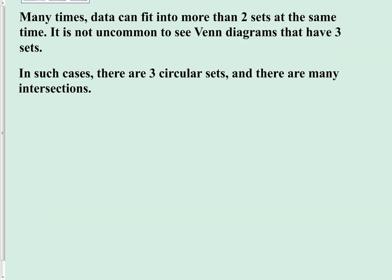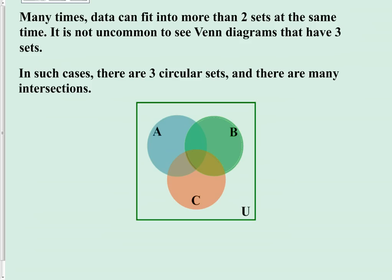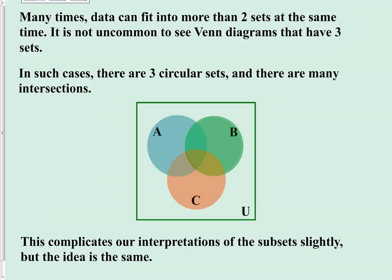So in the case that we do have three sets of information being considered in a particular Venn diagram, obviously there's going to be three circles. And instead of just having one intersection, like we did when there were two sets, you can see there are many intersections. Particularly, there are four of them. We have three particular intersections where each of two of the three sets intersect, meaning there's an intersection between set A and B. There's also an intersection between set B and C, and an intersection between set C and A. And then there's also an intersection where all three sets run across each other.